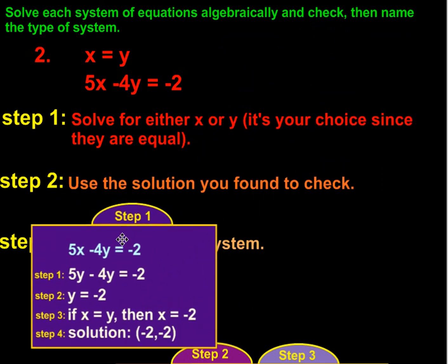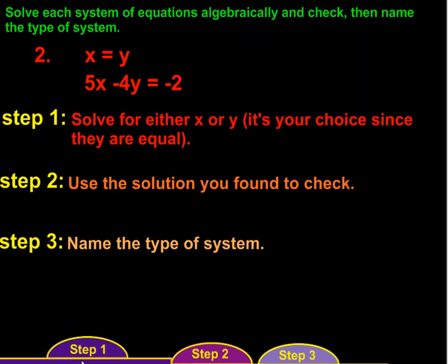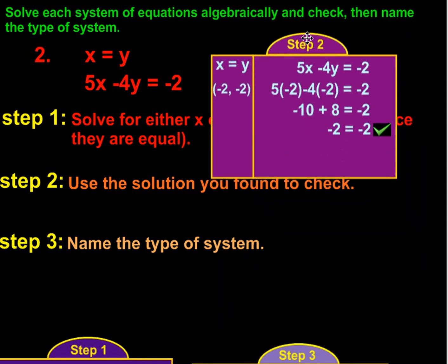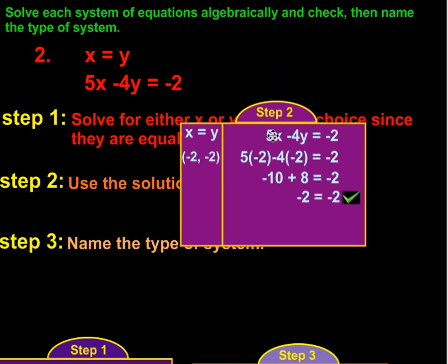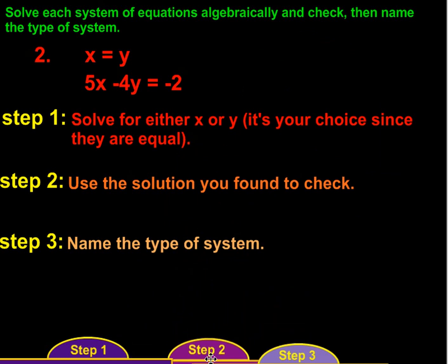We'll take that solution and moving on to step 2, we'll use the solution to do a check. So, if we have negative 2, negative 2, and we have 5x minus 4y equals negative 2, then we have 5 times negative 2 minus 4 times negative 2 equals negative 2. Well, that gives us negative 10 plus 8 equals negative 2. Negative 10 plus 8 is negative 2, which of course equals negative 2. So, our check is successful.